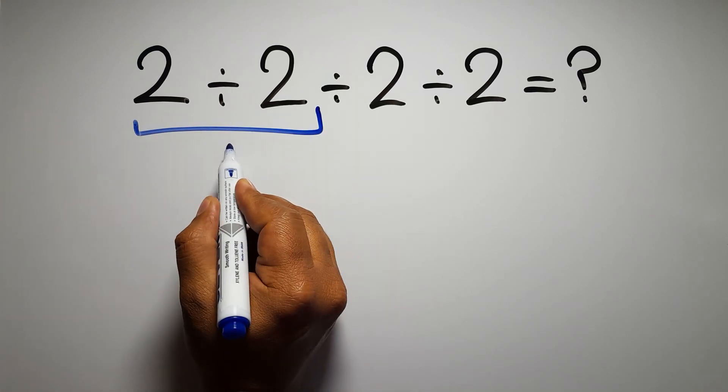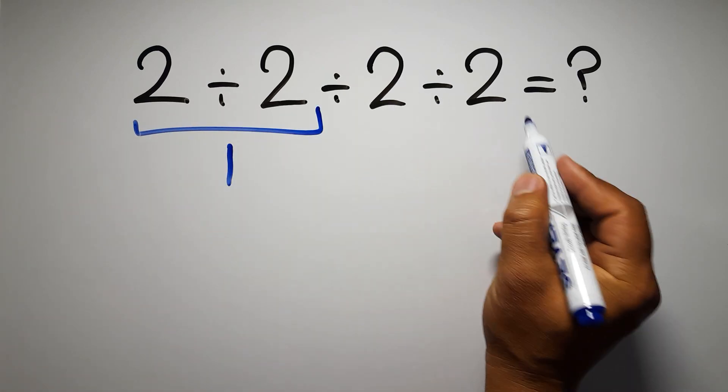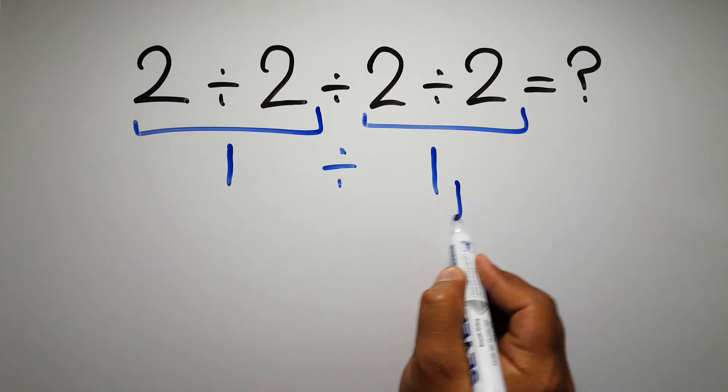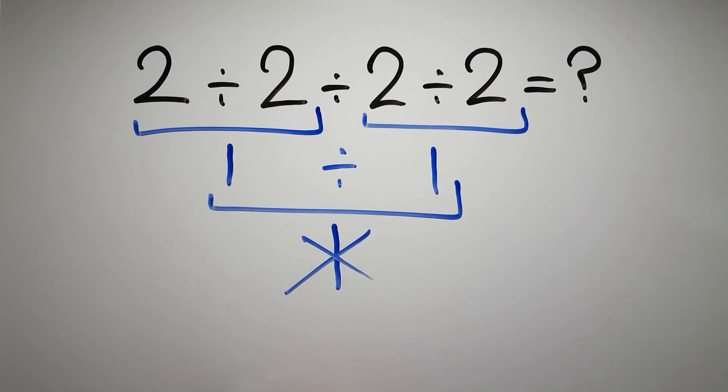2 divided by 2 is just 1, and again here we have 2 divided by 2, so 1 divided by 1, which equals 1, but this answer is not correct.